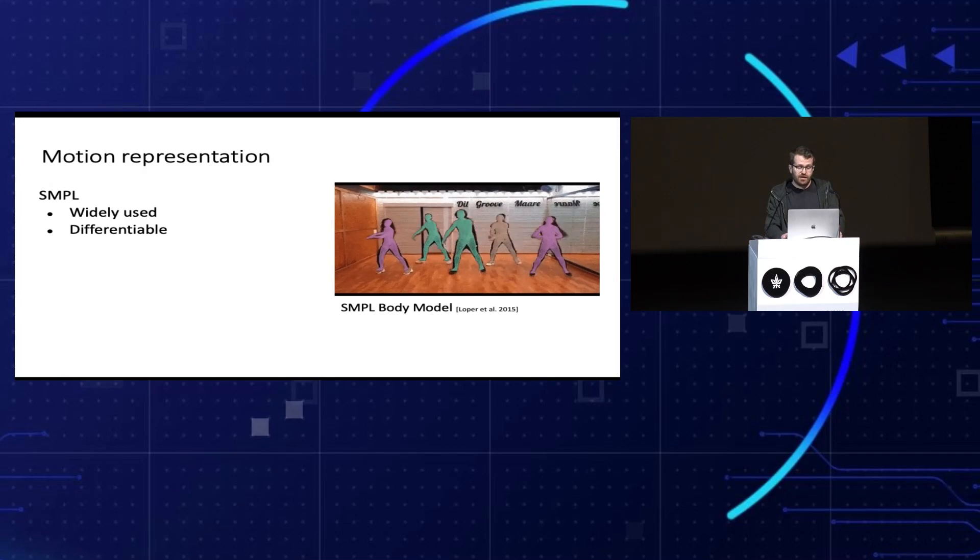Maybe the main challenge in motion generation is the availability of data. But before we talk about this, let's define what this data actually looks like. Motion is defined on top of a human skeleton. For each frame, a series of joint angles defines a single pose. Doing so over time, the sequence of poses gives us motion. So the tensor we actually generate is joints cross time.